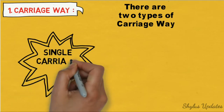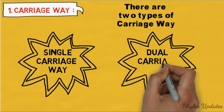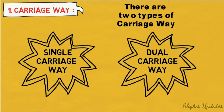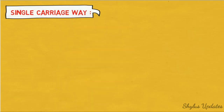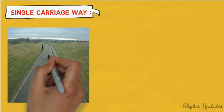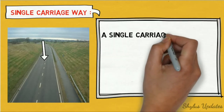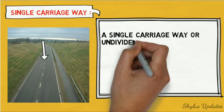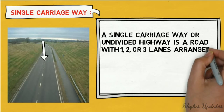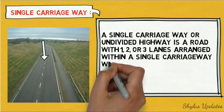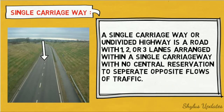There are two types of carriageway: single carriageway and dual carriageway. First, let us see single carriageway. A single carriageway or undivided highway is a road with one, two, or three lanes arranged within a single carriageway, with no central reservation to separate opposite flows of traffic.